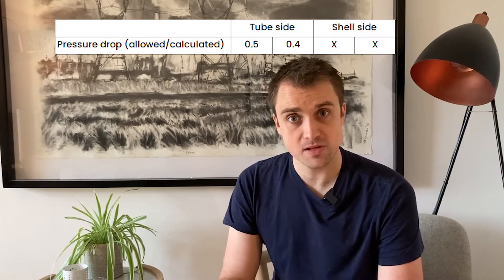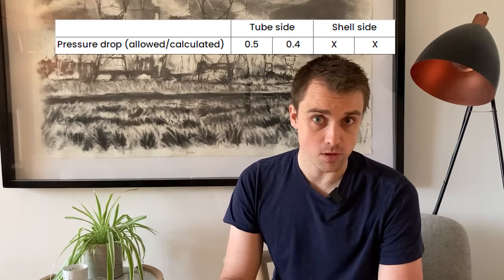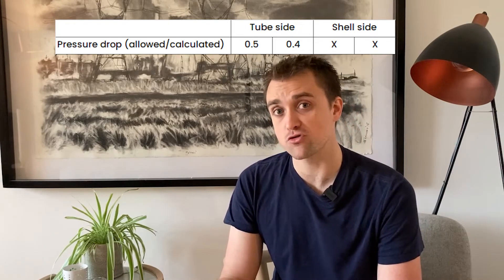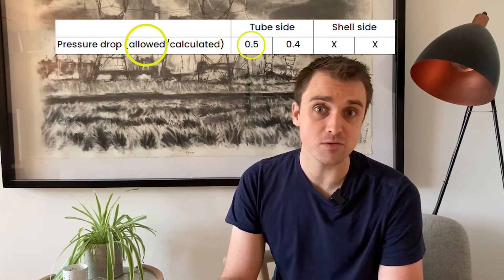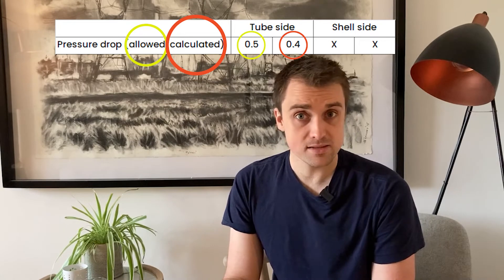Equipment datasheets — most often heat exchanger ones — will usually give two pressure drops: an allowable pressure drop and a calculated pressure drop. In this example, our allowable pressure drop is half a bar, but our calculated pressure drop after sizing the three quarter inch tubes is 0.4 bar. Why is it that datasheets report both of these values?